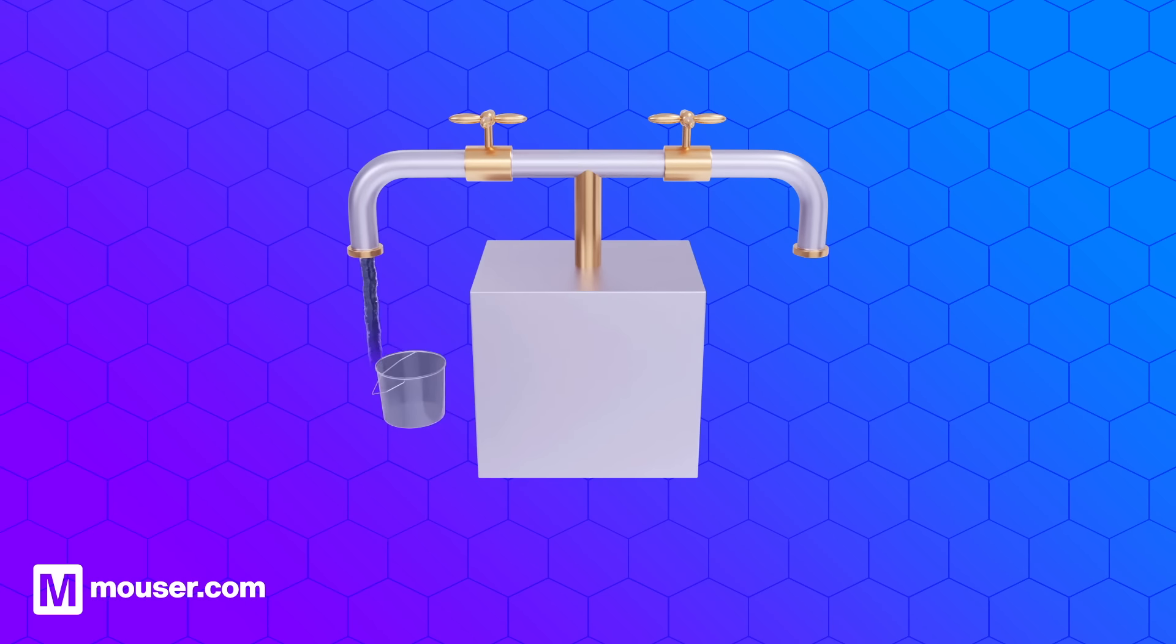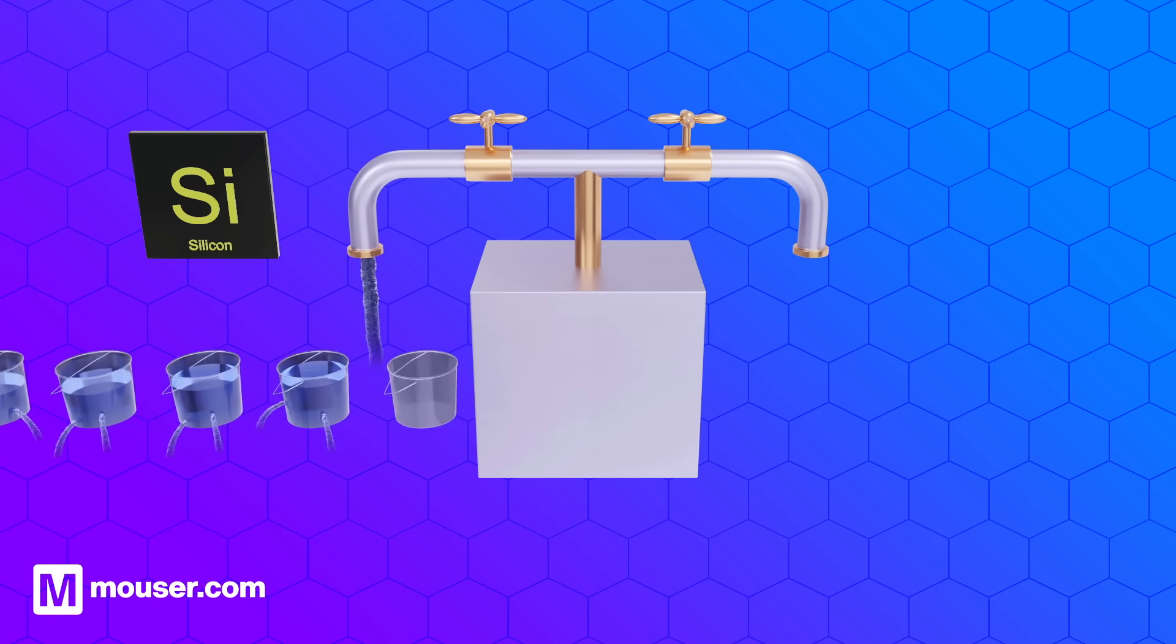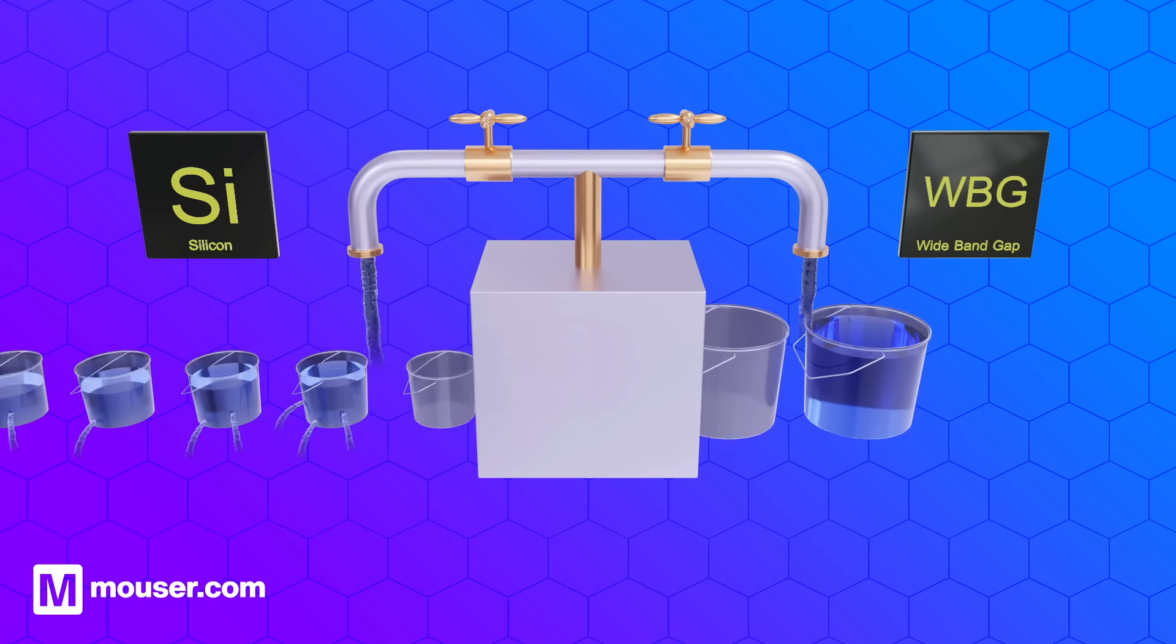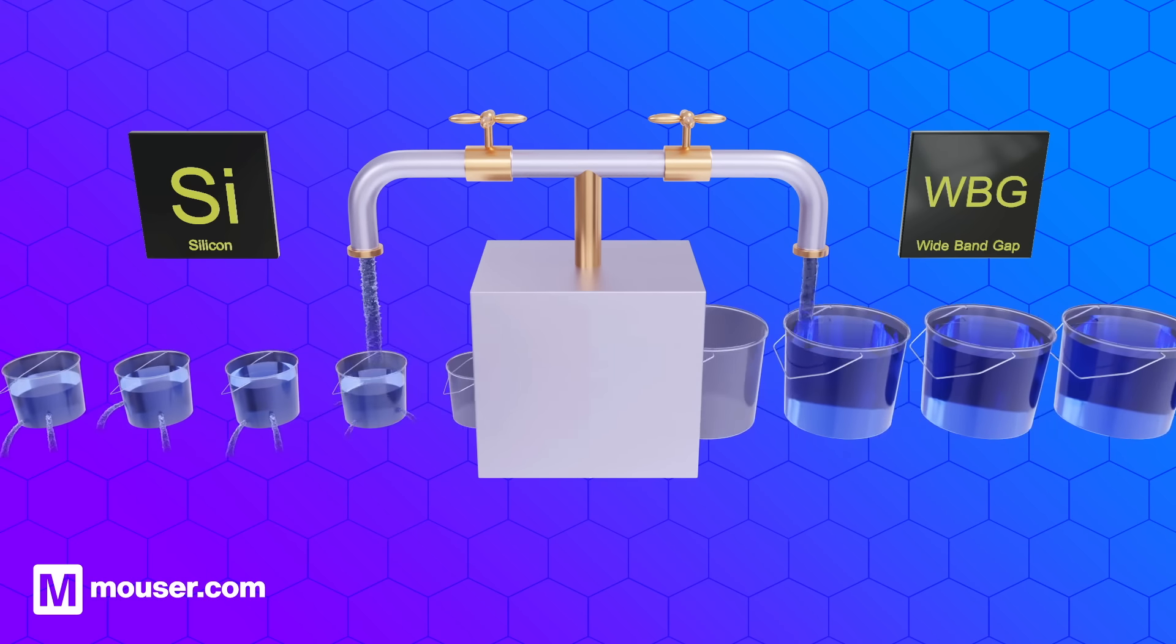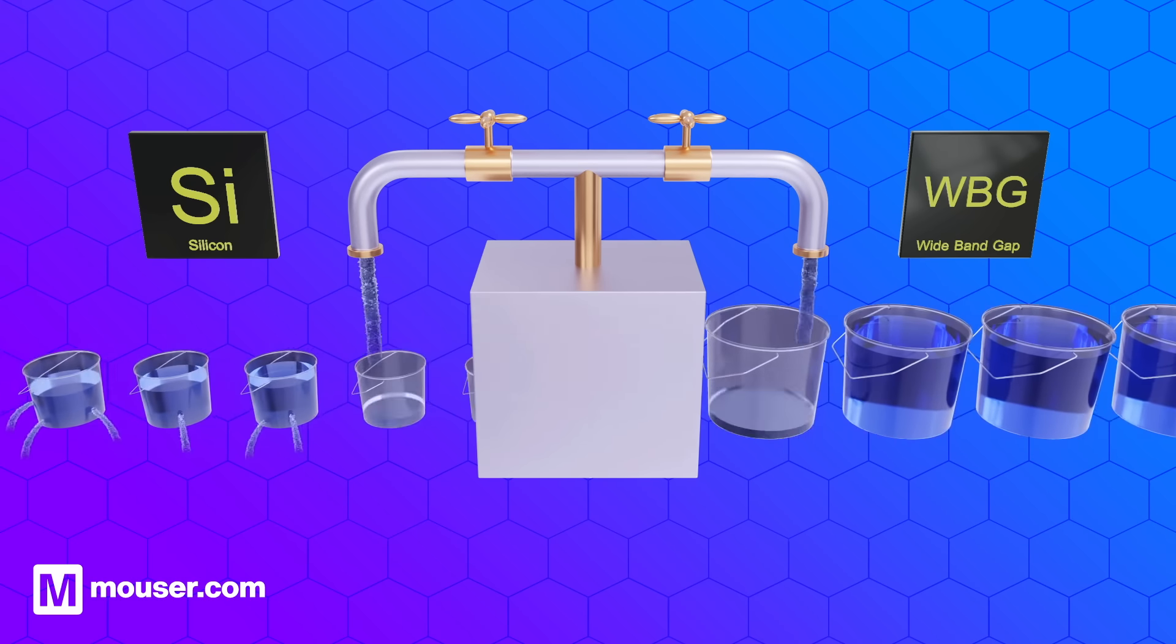You can think of this like passing water across a chain of buckets at high speed. With silicon buckets, a significant amount of water is lost. With wide band gap buckets, each bucket is larger, water passes more quickly and almost all the water is retained.